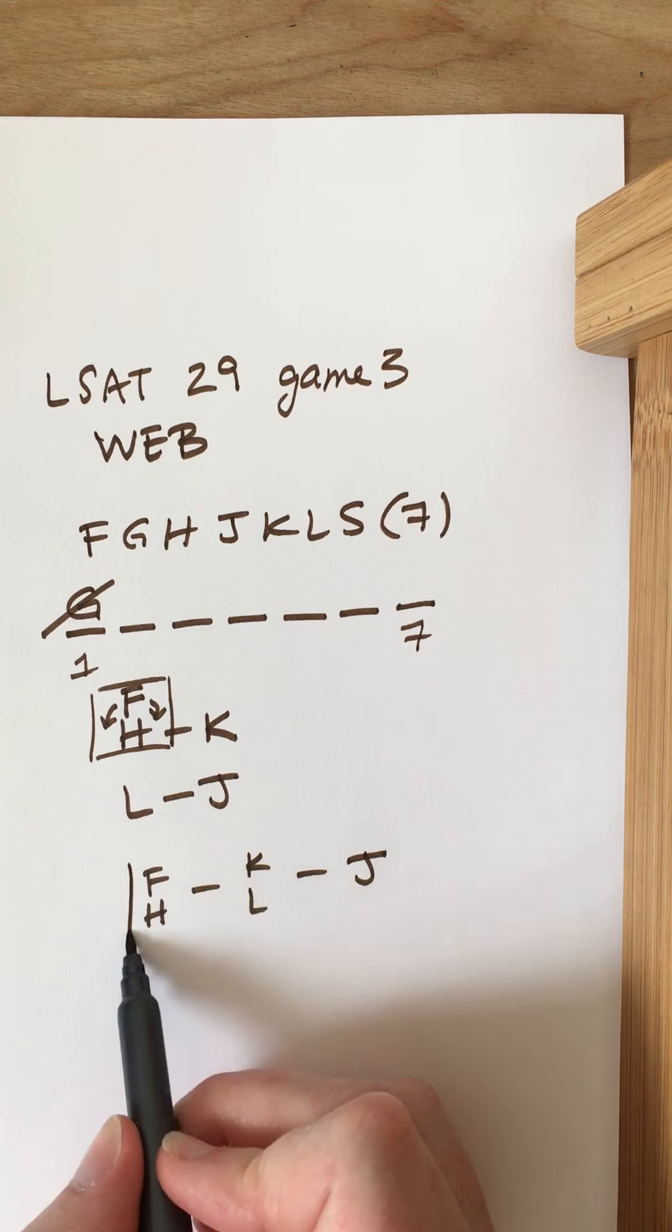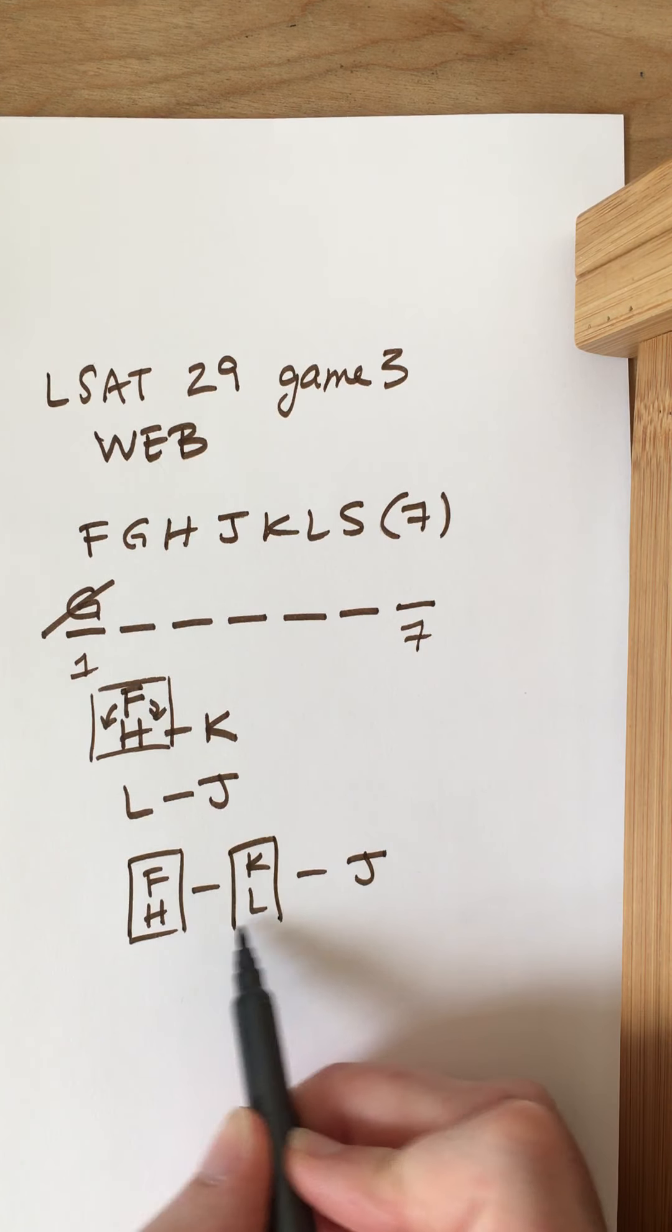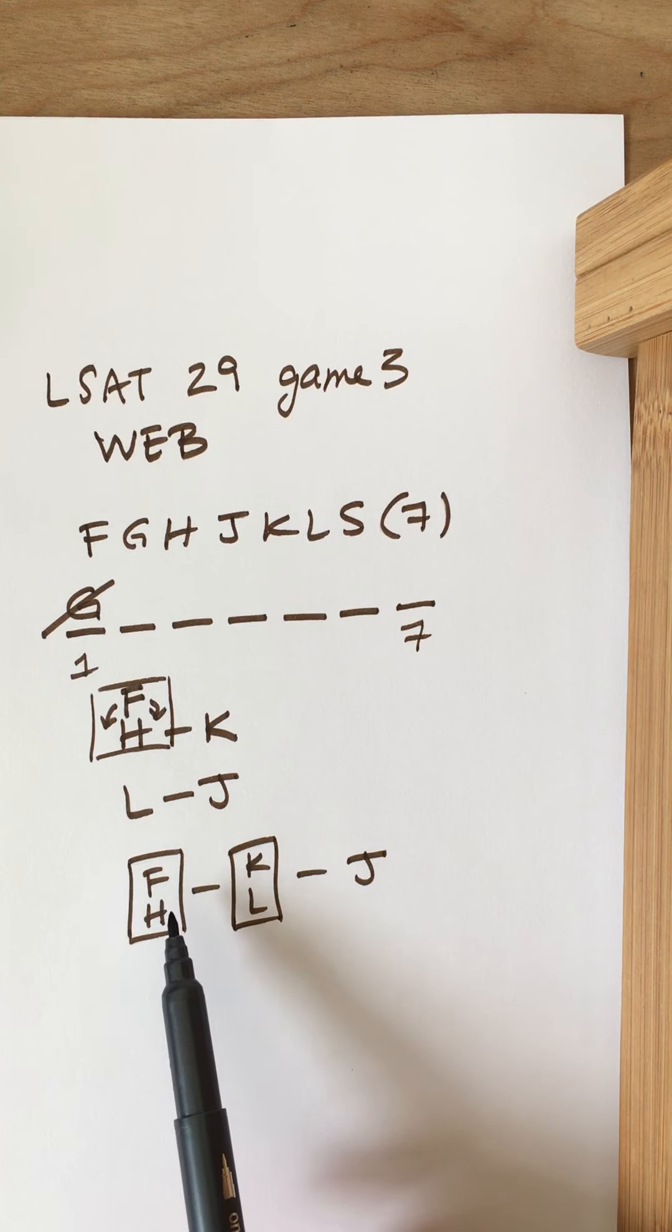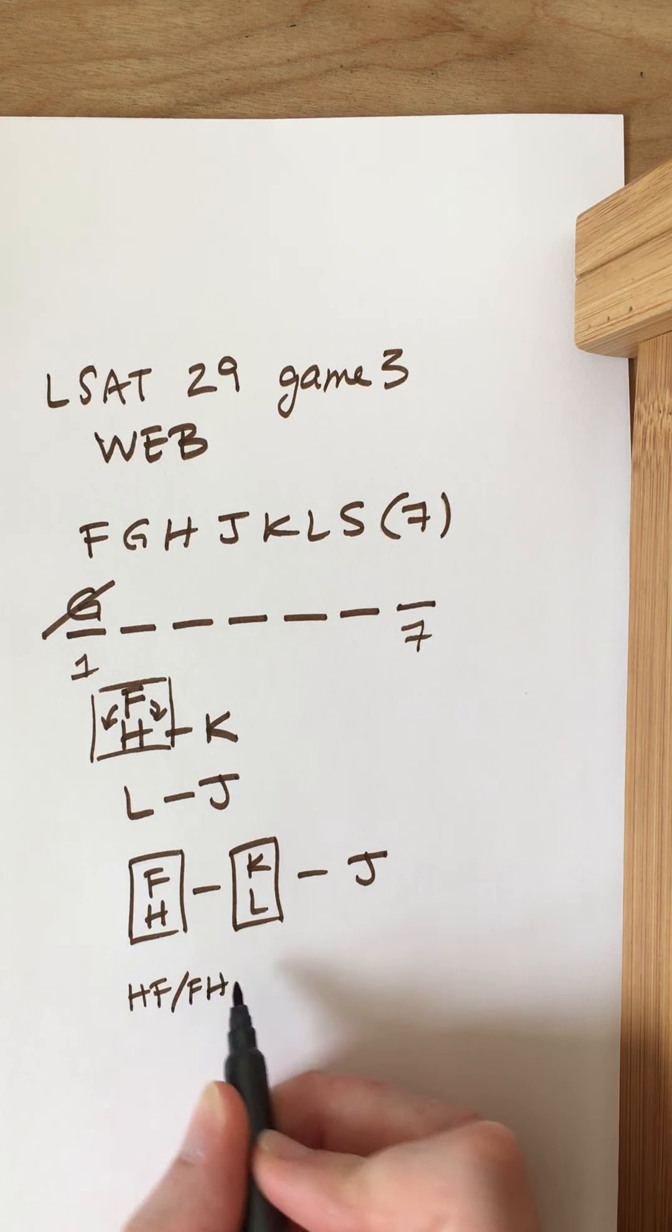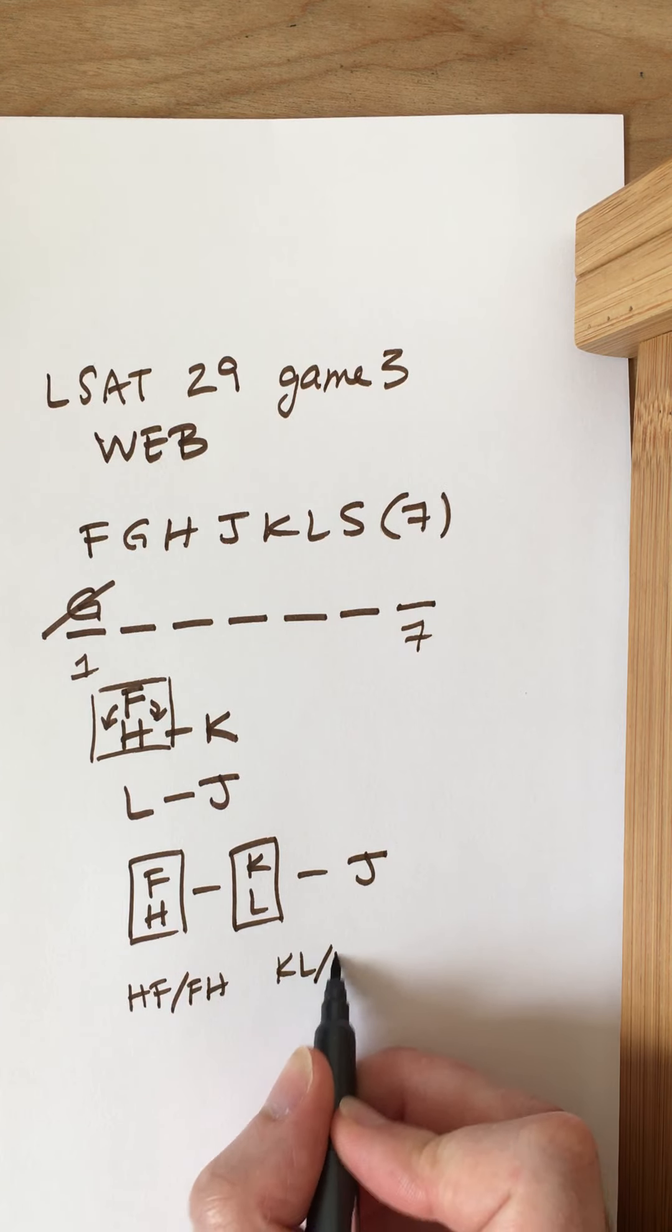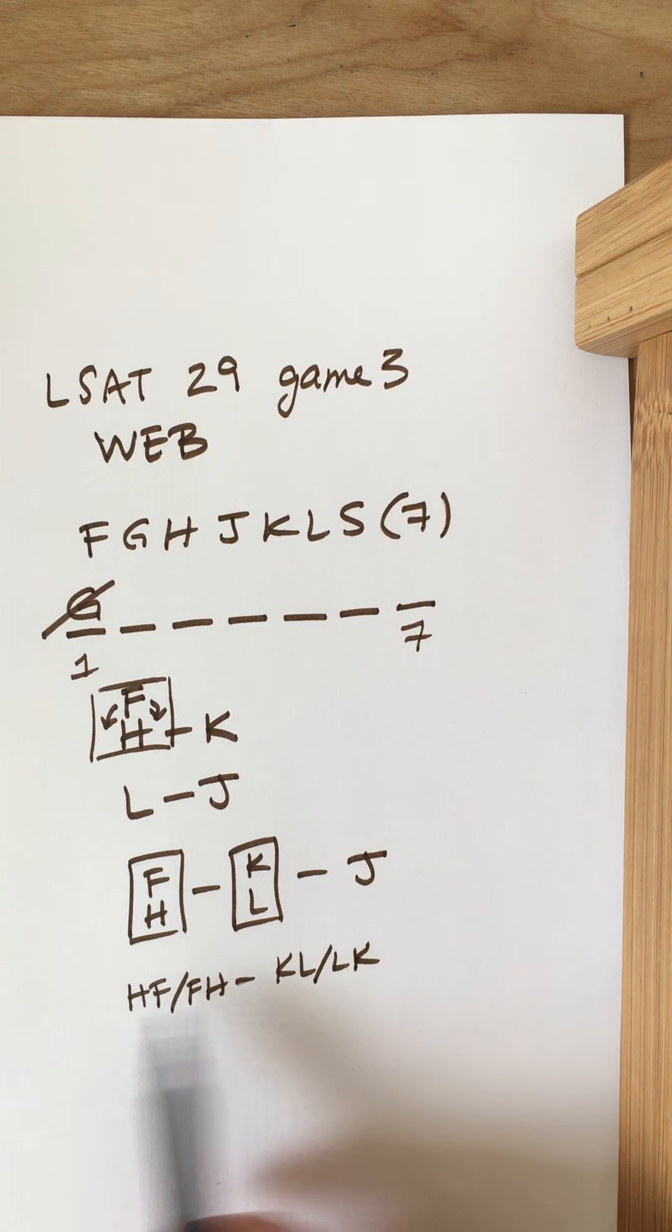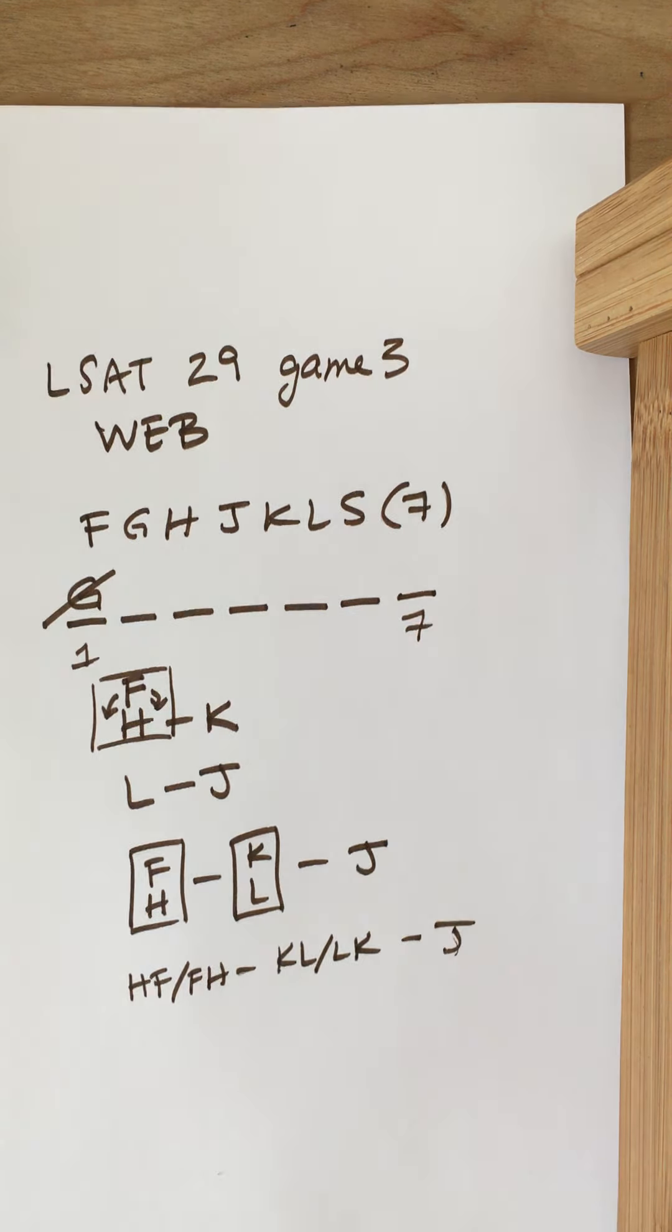So these little boxes, these guys can flip, right? So I can have HF or FH, KL or LK. Those are my options there. So a couple ways that we can represent that.